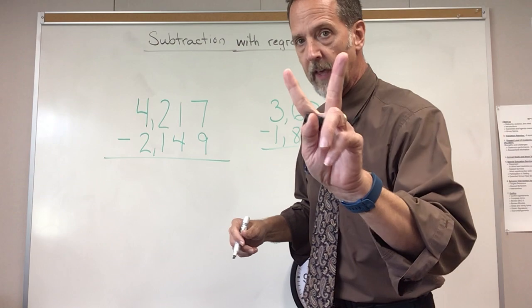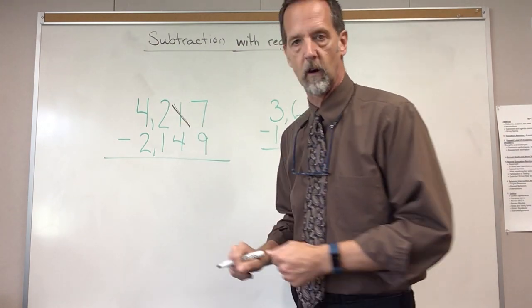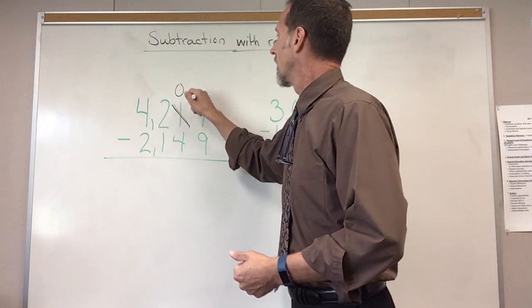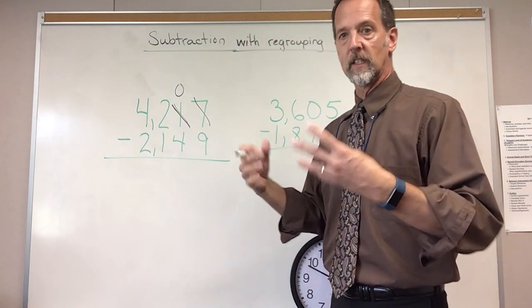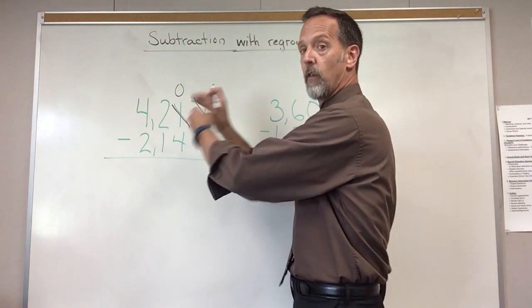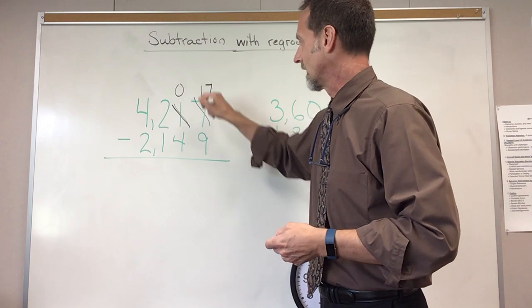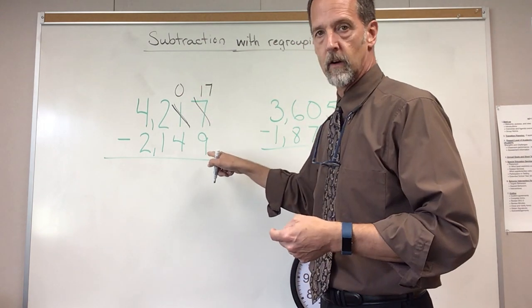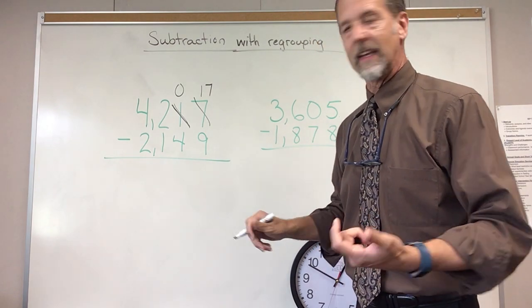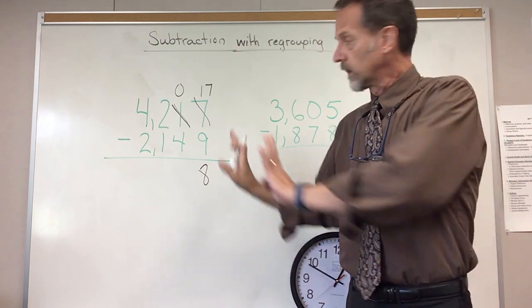You're going to change two places. The first place will always get smaller — you're borrowing from it. The 1 is going to get smaller and become a 0. Now this place gets larger. The 7 gets larger — not by 1, but by 10, because I'm taking a 10 over and breaking it apart into 1s. So 7 is going to become 17. Now I can go ahead and subtract: 17 minus 9 is 8. I'm done with the ones place.